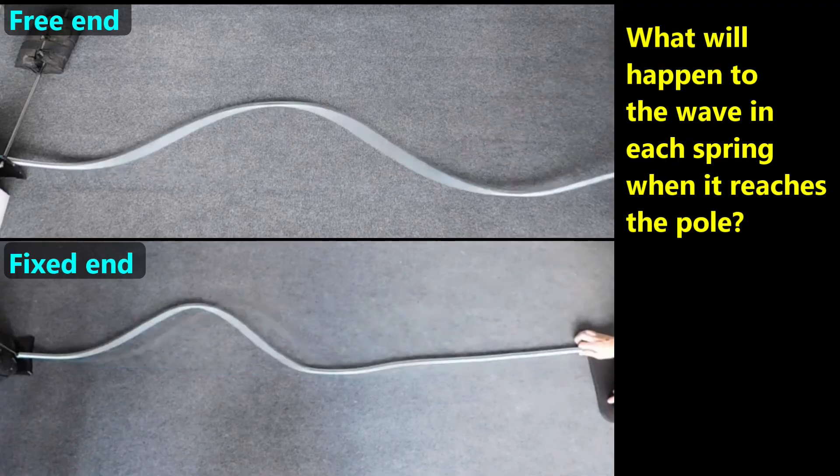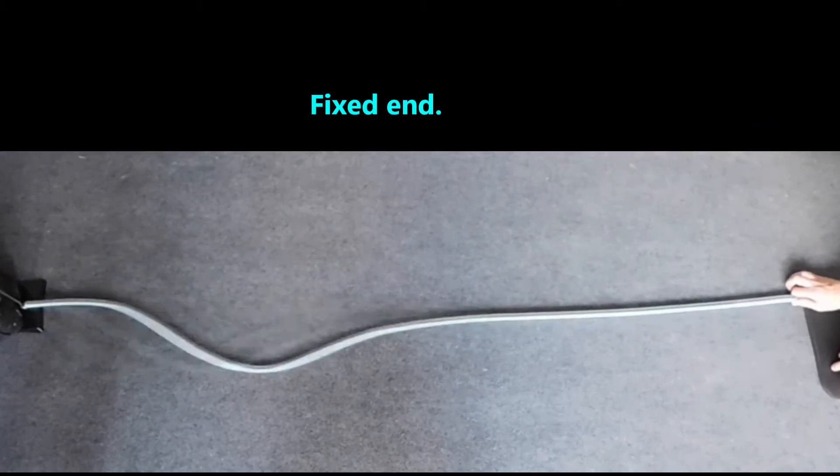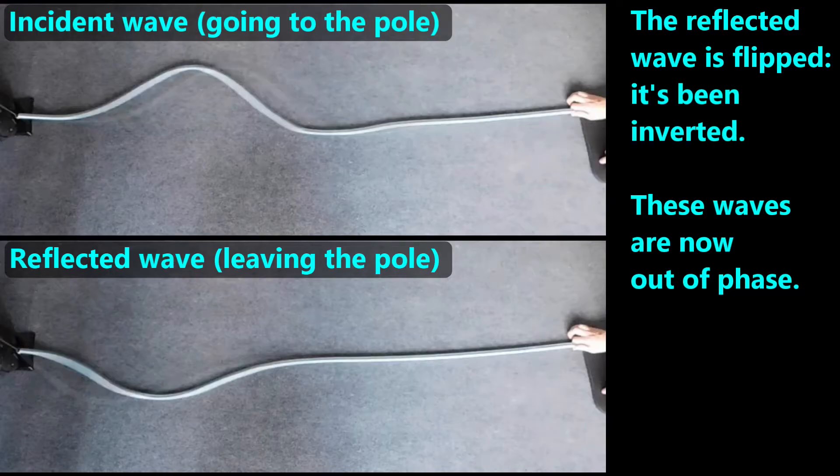These are metal springs. What do you think will happen to the wave in each spring when it reaches the pole? When the spring's end is held in place, we say it's fixed. When the wave reflects off the pole, it appears to flip upside down. We say it's been inverted, and it's now out of phase with the incident wave.